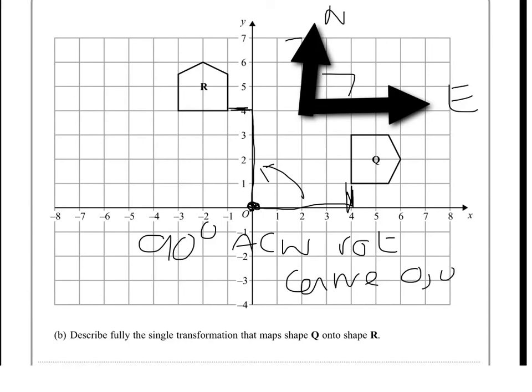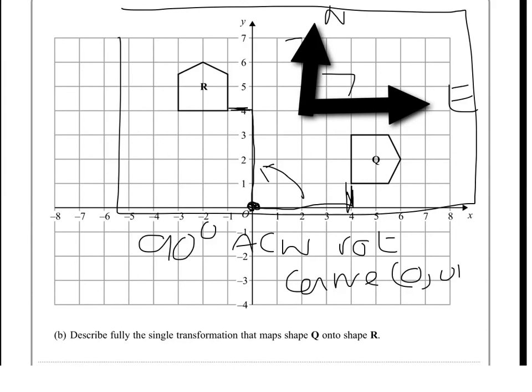If you took tracing paper, placed it around the shape, and then rotated 90 degrees about this centre, you'll see that Q lands right on top of R. Confirming that it's a 90 degrees anticlockwise rotation, centre 0, 0. So you're going to get one mark for 90 degrees, one mark for anticlockwise, and one mark for centre 0, 0.